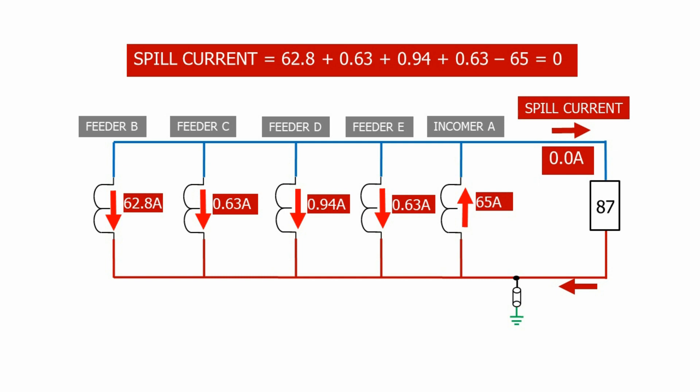This is obviously an ideal case, but in practice small differences between the current transformers may create a small amount of spill current. When we're deciding on the high impedance busbar protection pickup value, we take this possible spill current into account.